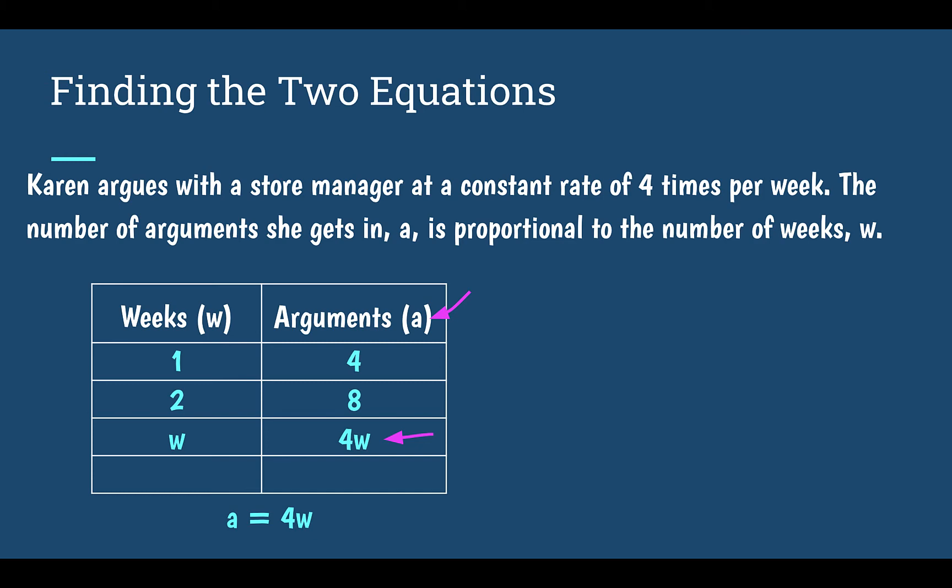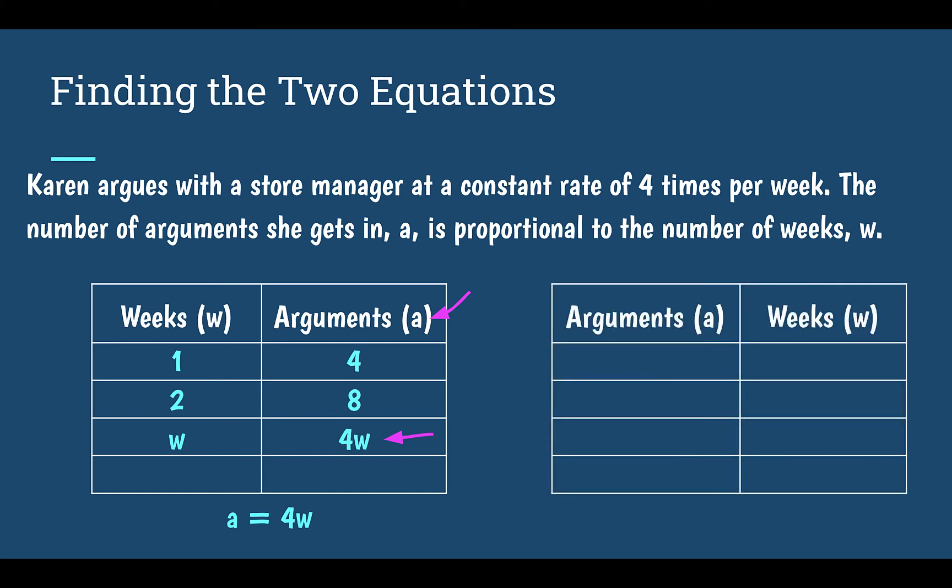Our other equation is going backwards. What if we know the number of arguments she's been in and we want to figure out how many weeks it's been? I'm going to fill in the table the same way as before. I know that one week was equal to four arguments. So I filled it in in the same order, I just reversed the position on the table. So that way, arguments is my input, weeks is my output.